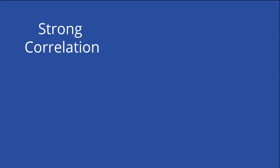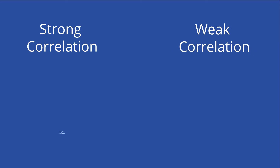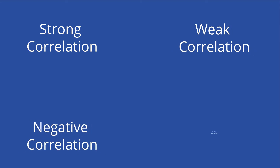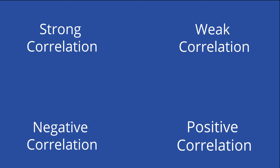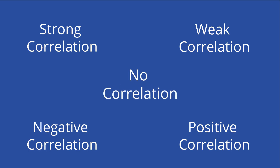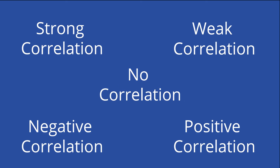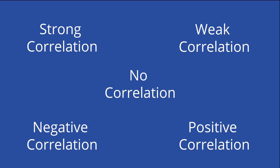Data can correlate in five basic ways. Two variables can be strongly or weakly correlated, and they can be positively or negatively correlated. Of course, two variables can also show no correlation, which means they don't share any relationship at all.